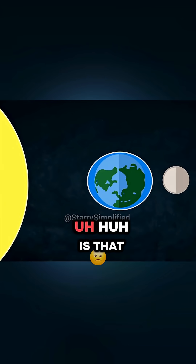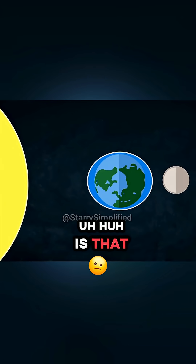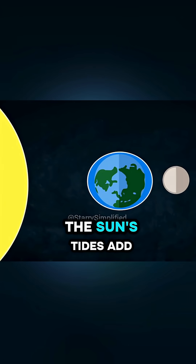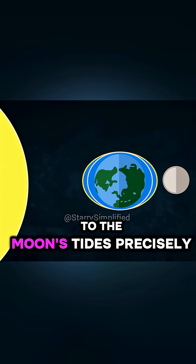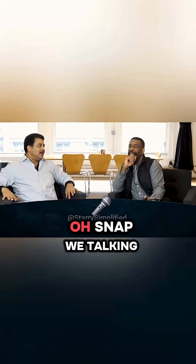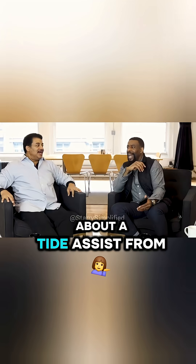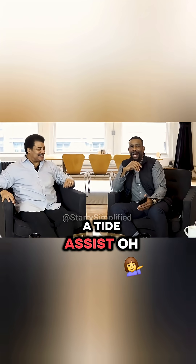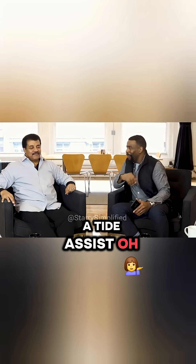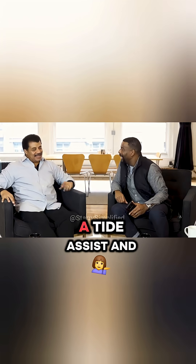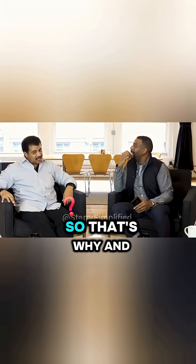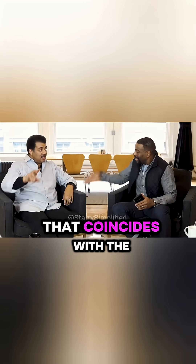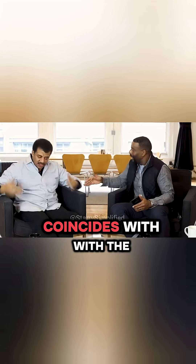What happens at full moon is that the sun's tides add to the moon's tides precisely. Oh snap, we're talking about a tide assist from the sun? A tide assist! And so that's why... and that coincides with the full moon?